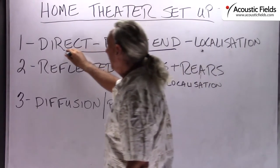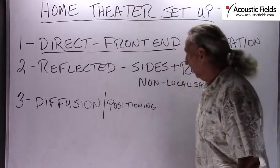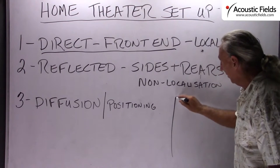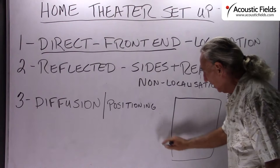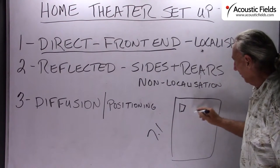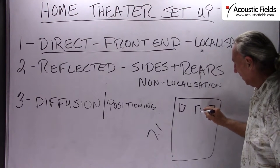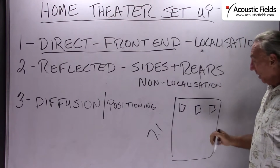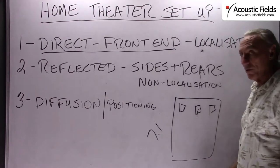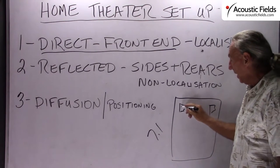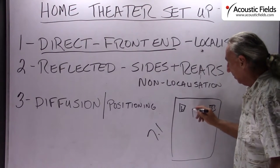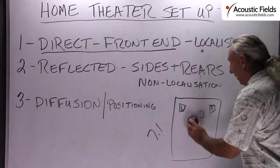What is our home theater? We have the direct energy from the front of the room. So let's just take a normal 7.1 system. We're going to have left, right, and then we're going to have center. Now, you all know I don't like a center channel in a home theater. You can get most of the information from left and right, or the center channel — we never want to put it in a different domain, but we'll talk about that later.